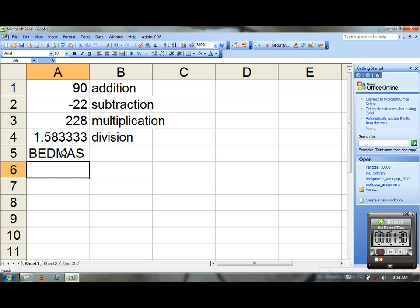BEDMAS, if you recall, is the order of operations as understood by most schools in Ontario. Brackets and exponents are first. Division and multiplication are second. Addition and subtraction are third.